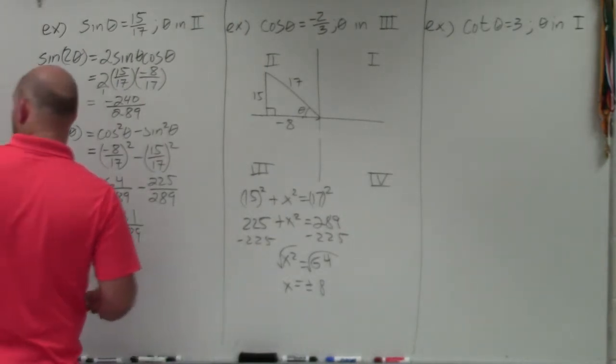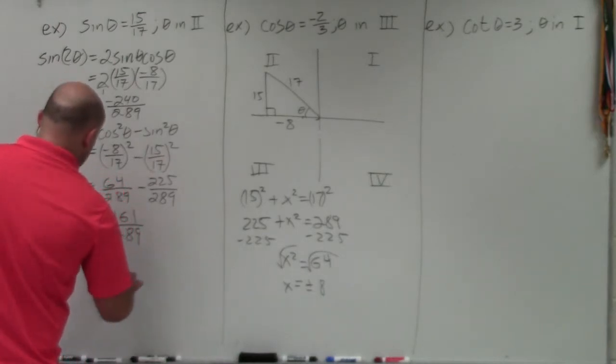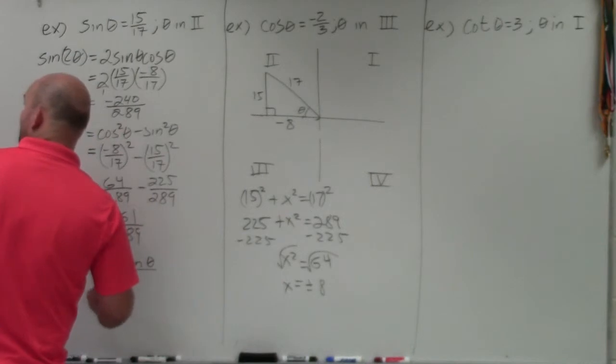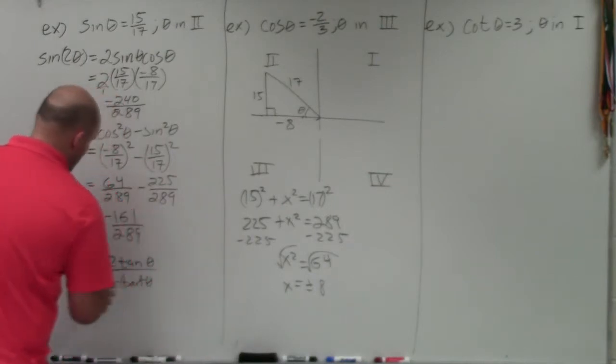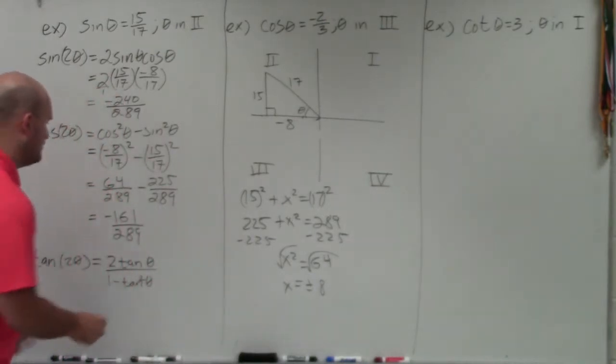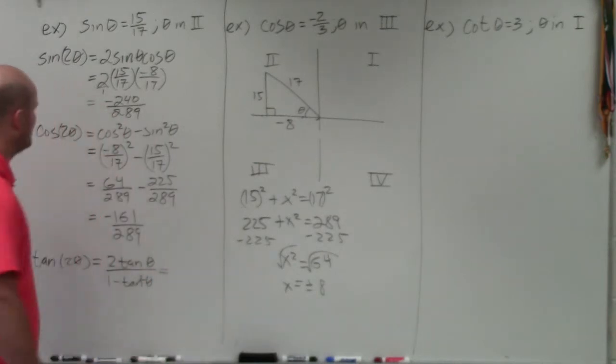So tangent of 2 theta, we're going to use tangent of 2 theta, which is going to be 2 tangent of theta divided by 1 minus tangent squared of theta. So I don't know why I'm using the same color. I should change that up.